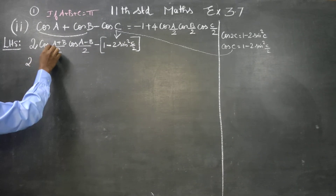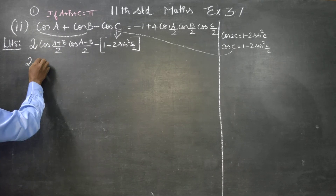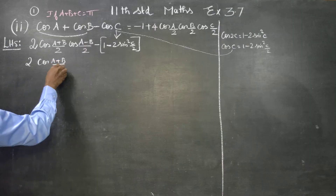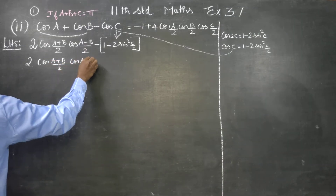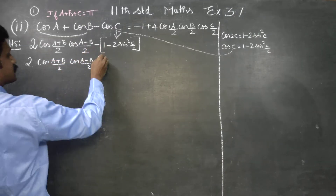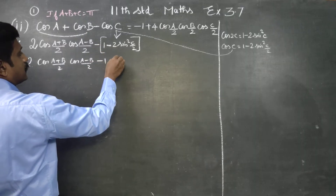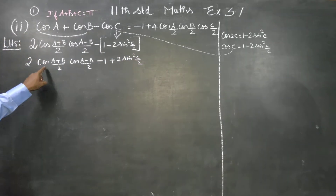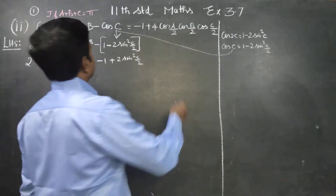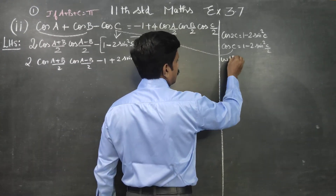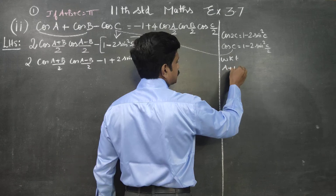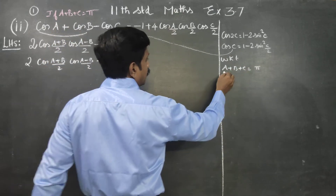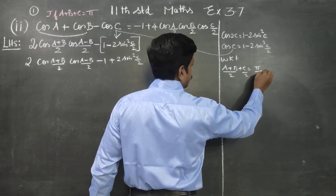2 cos((A+B)/2) · cos((A-B)/2), minus 1 plus 2 sin²(C/2). Cos((A+B)/2) is equal to cos... we know that A plus B plus C is equal to π, so A plus B plus C = π, divided by 2.